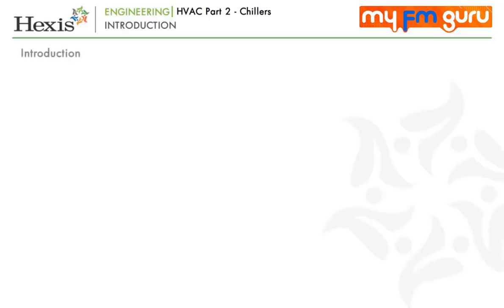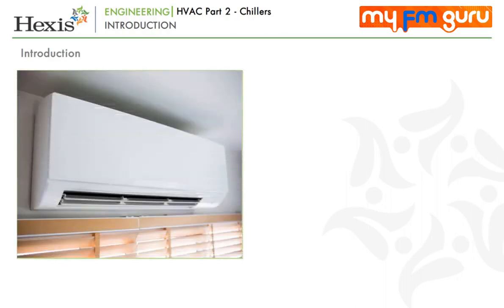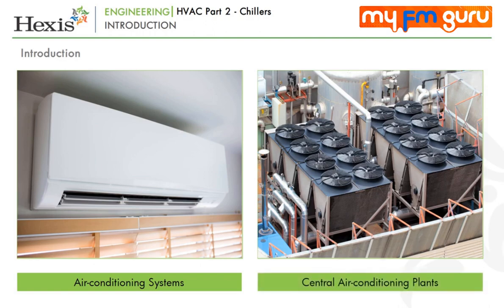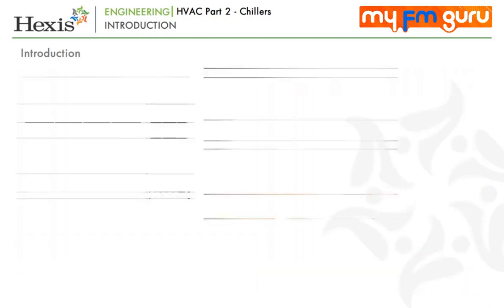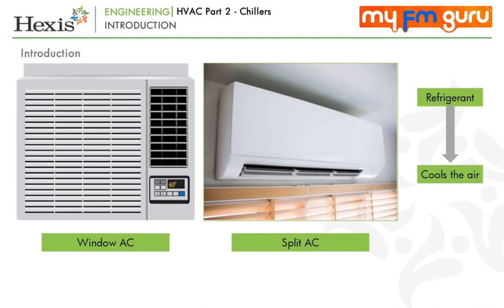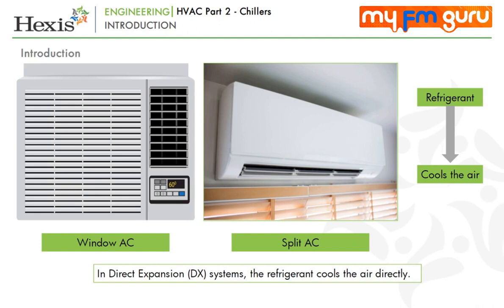Let us begin with the introduction. In the first module, we learnt about air conditioning systems and were introduced to central air conditioning plants. We also saw that in the window and split type of ACs, the refrigerant directly cools the air as the warm air passes over the evaporator pipes containing the chilled refrigerant. This type of cooling system, where the refrigerant cools the air directly, is also known as direct expansion, i.e. DX systems.